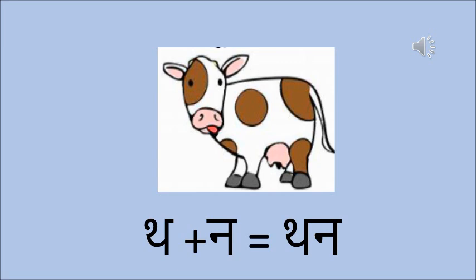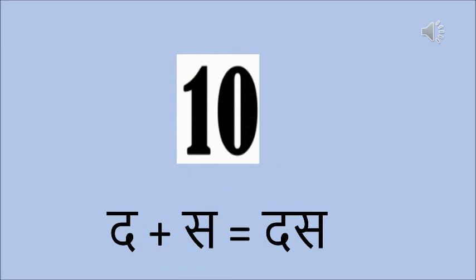Than — Tha and Na together make Than. Than is the part of the cow from where we get the milk. The next one is Das — Da and Sa together make Das. Das is the number 10.